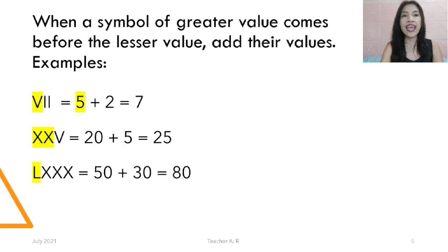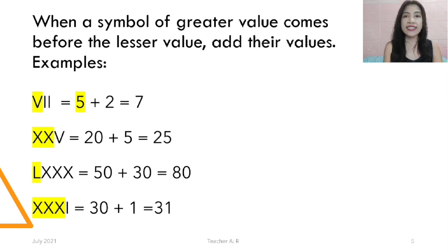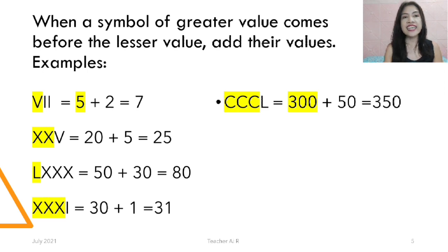We also have LXXX: L is 50 and XXX is 30, so 50 plus 30 equals 80. We also have XXXI: XXX is 30 and I is 1, so 30 plus 1 equals 31. And CCCL: CCC is 300 and L is 50, so 300 plus 50 equals 350.